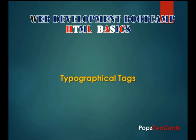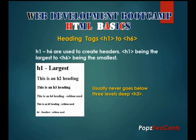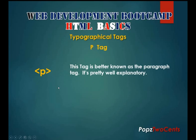Our next section will cover typographical tags. The first one we'll cover is the header tag. Headers are from h1 to h6, with h1 being the largest and h6 being the smallest. Usually we never go below three levels deep. The first tag is the p tag, better known as the paragraph tag.